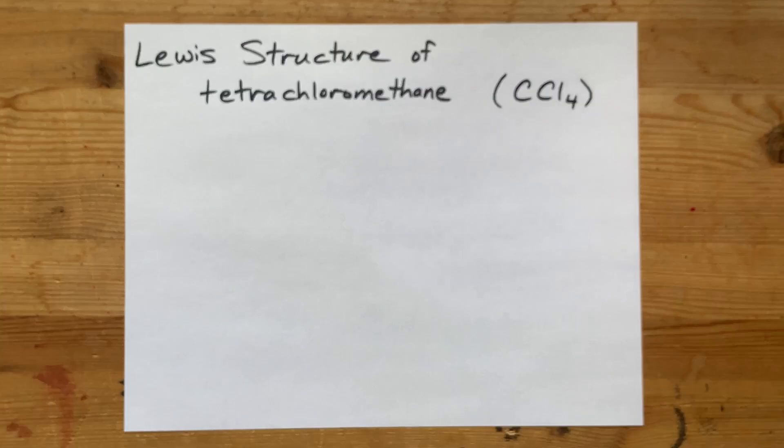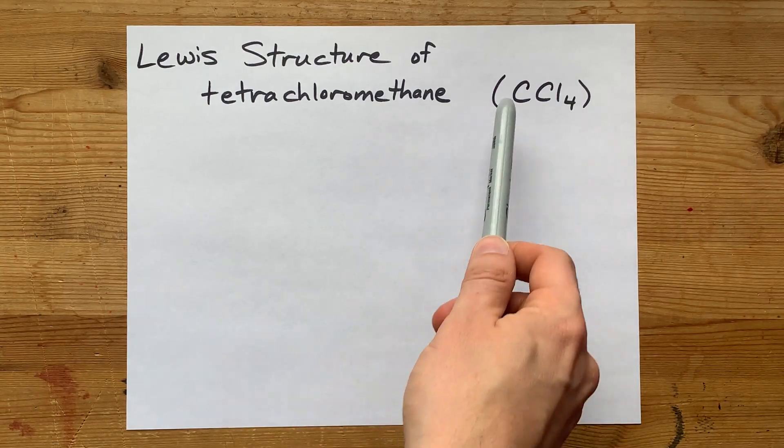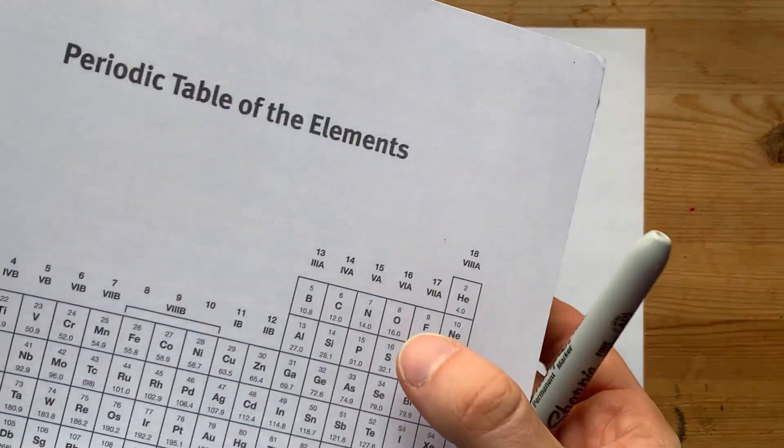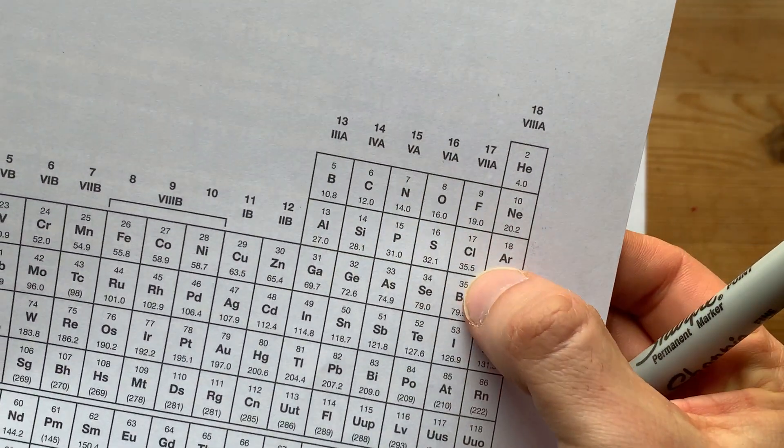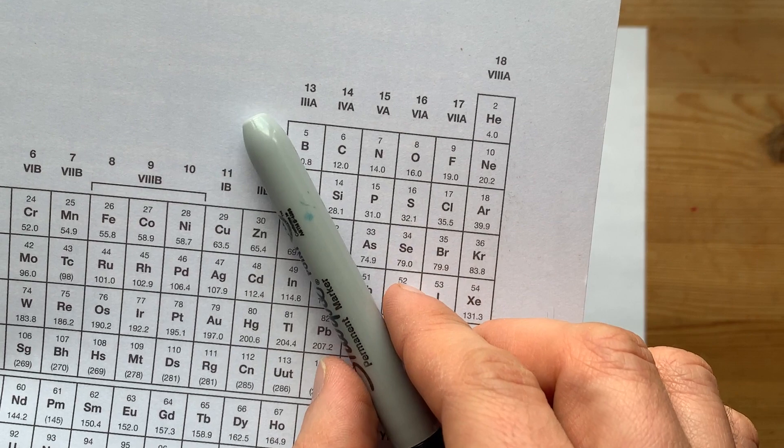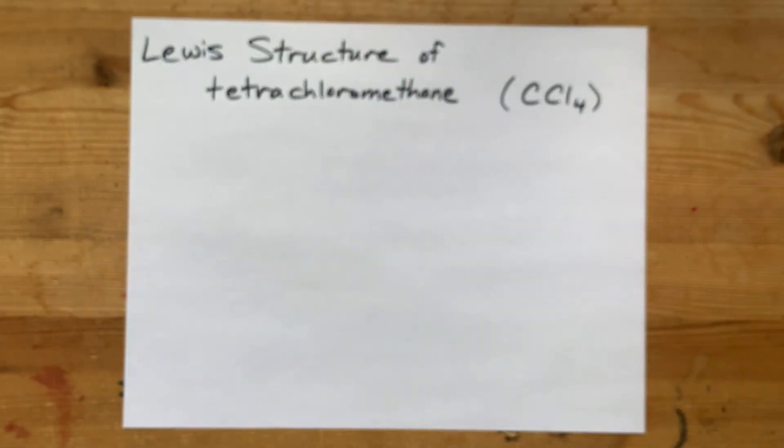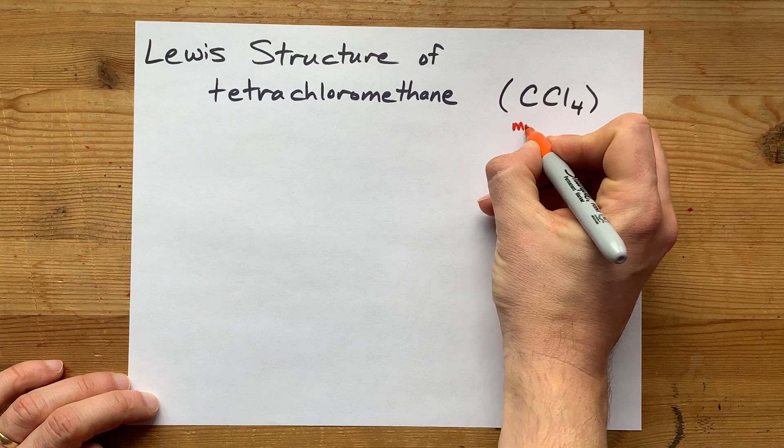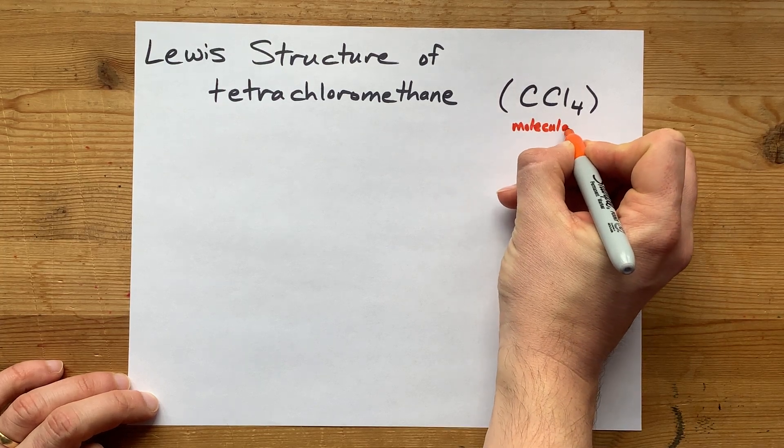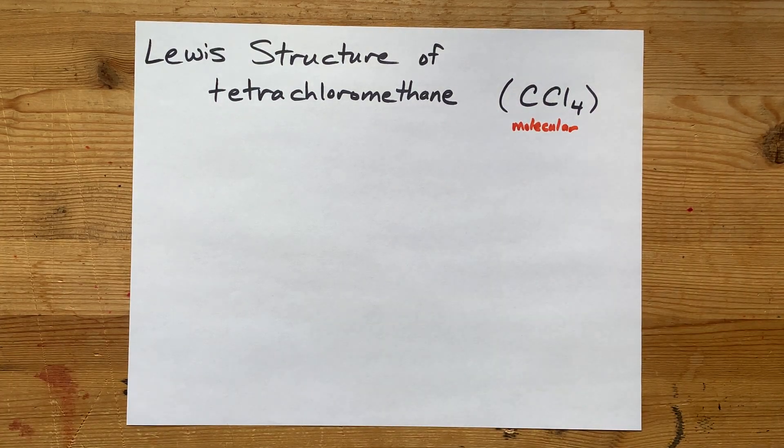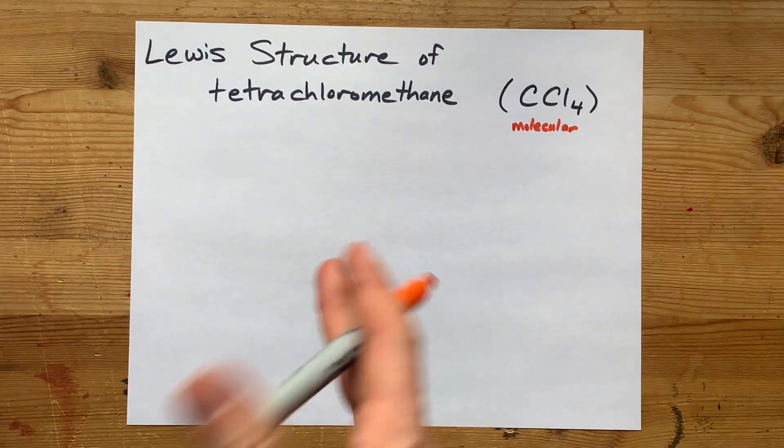Let's draw the Lewis structure for tetrachloromethane, which is CCl4. Carbon and chlorine are both non-metals. They come from the right-hand side of this staircase on the periodic table. When non-metals combine together, they form a molecular compound, which shares electrons from one atom to another.